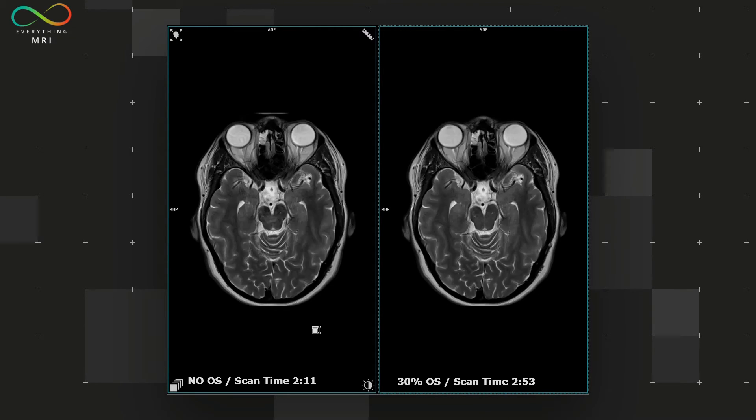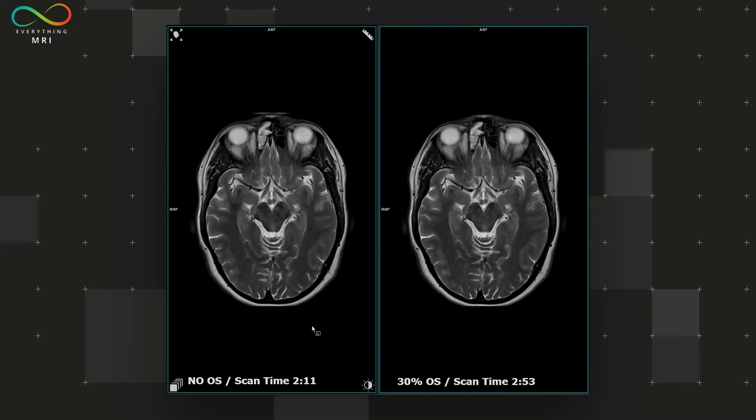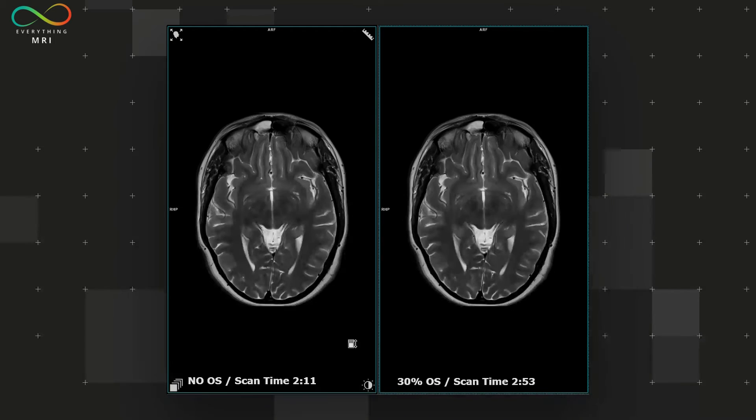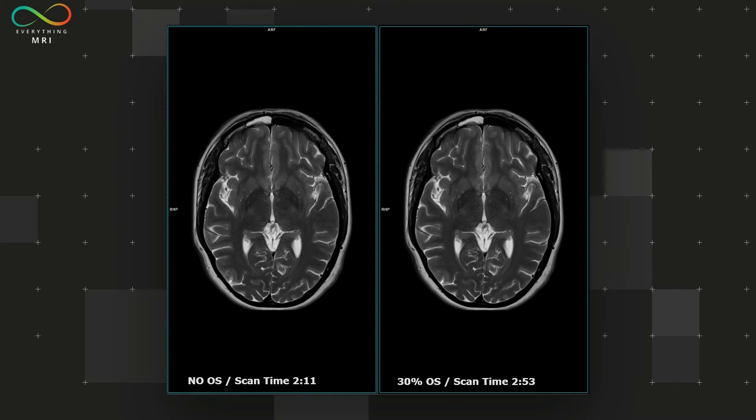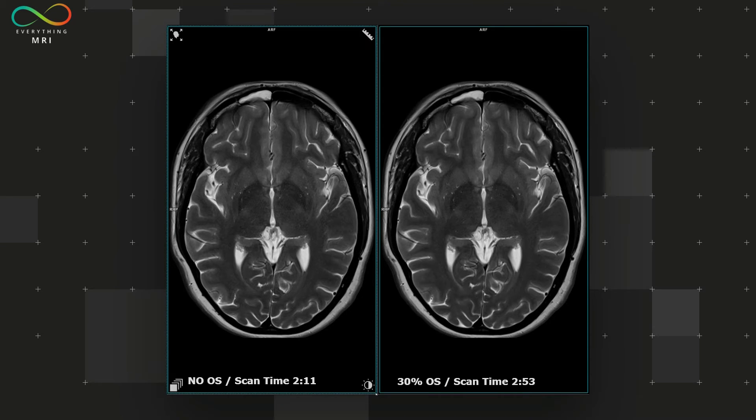You can see that there is the beautiful nose of our healthy volunteer which extends beyond the FOV. Luckily, still outside the brain parenchyma with no significant consequences. You might also notice the posterior part of the head wrapping anteriorly for the same reason. While not a major issue from a reporting standpoint, it's certainly not ideal for achieving top-notch image quality.